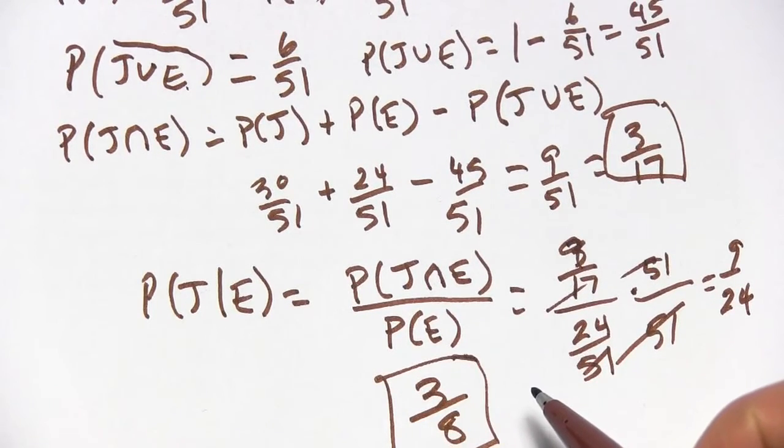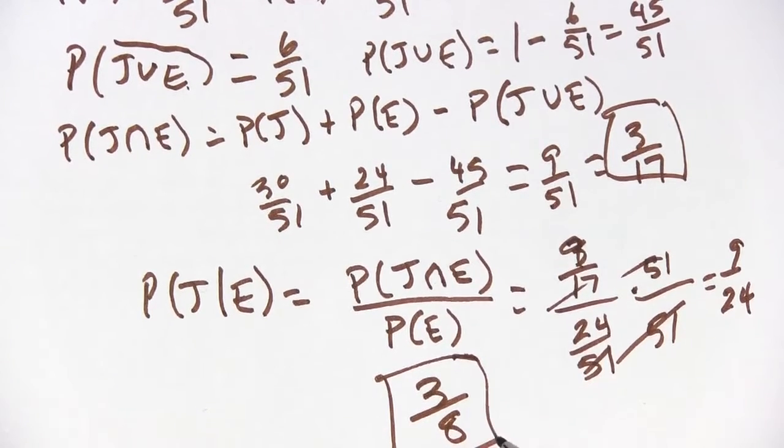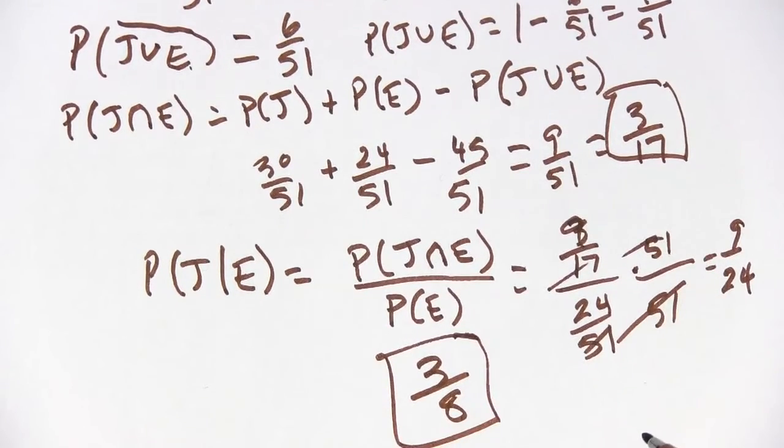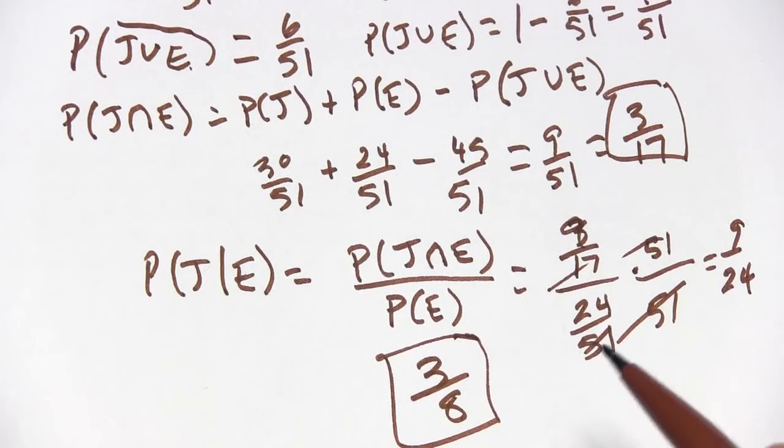So the probability of being a junior given being an economics major is 3 over 8. So that's a little bit of work with intersection and conditional probability.